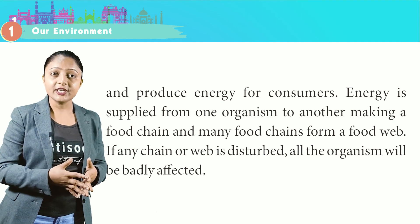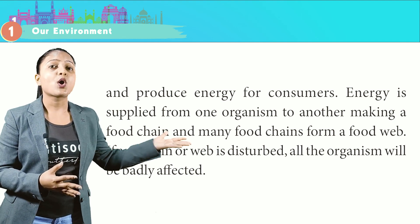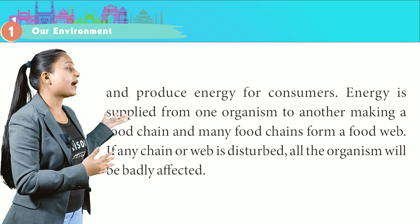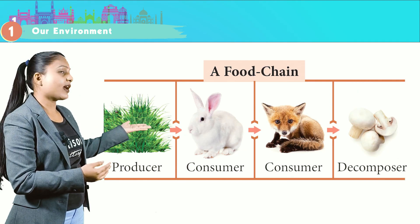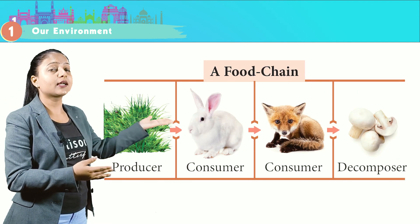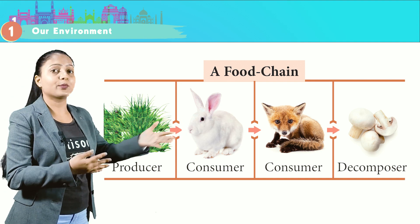Energy is supplied from one organism to another, making a food chain, and many food chains form a food web. If any chain or web is disturbed, all organisms will be badly affected. A typical food chain flows: producer → consumer → consumer → decomposer.